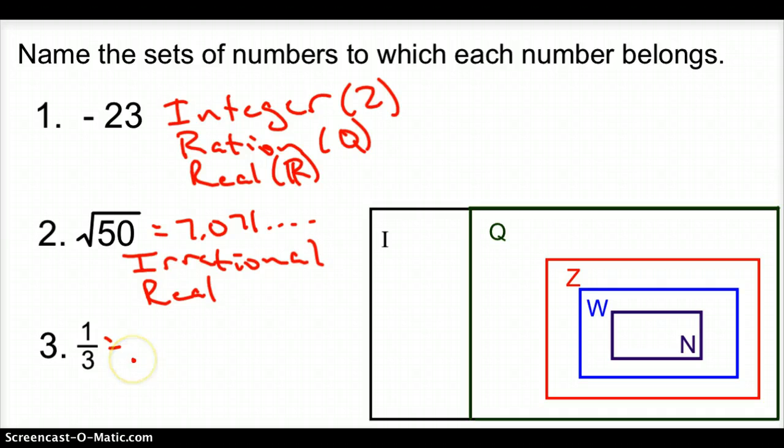Now 1 third as a decimal it writes this but since it can be written as a fraction since it can be written as a fraction we know that it is a rational number. Rational number, how do we represent a rational number q. If it's a rational number it's also a real number r with a bar through it.